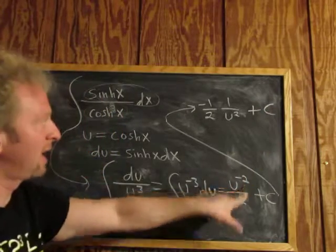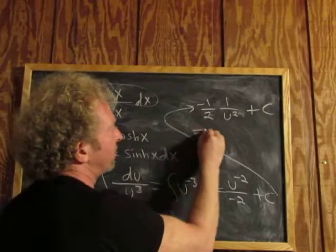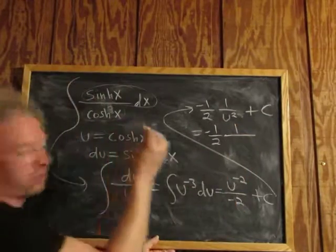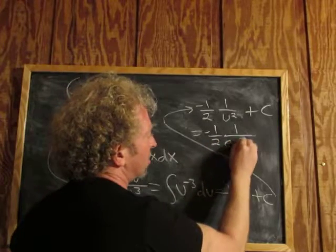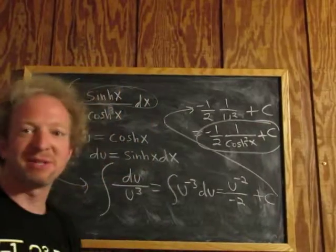And then maybe the last thing to do is replace u with cosh. So this is equal to negative 1 half times 1 over... And then u is cosh. So cosh squared x plus our constant c. I hope that made some sense.